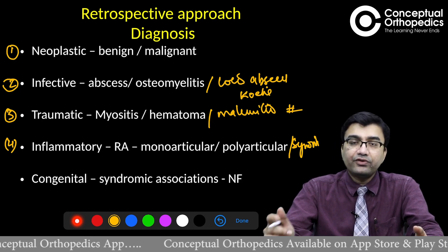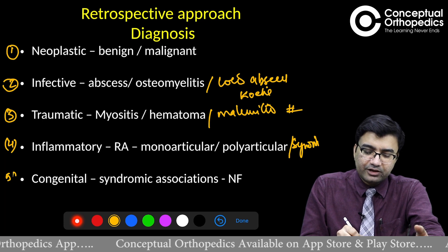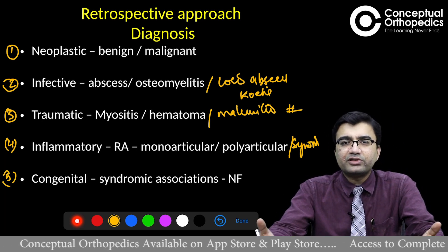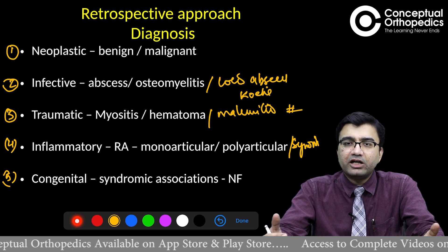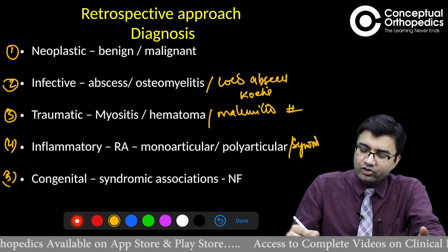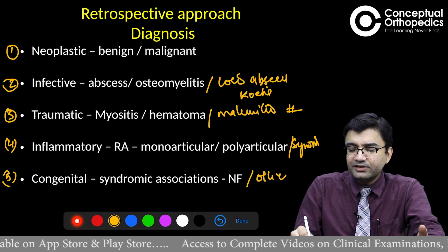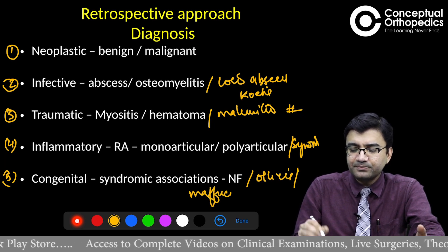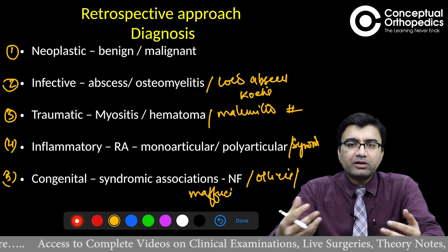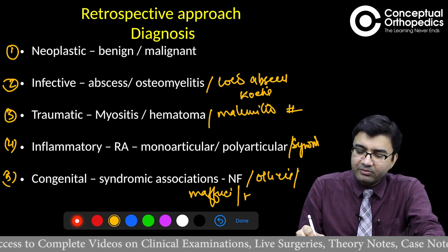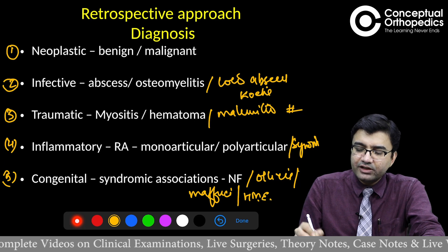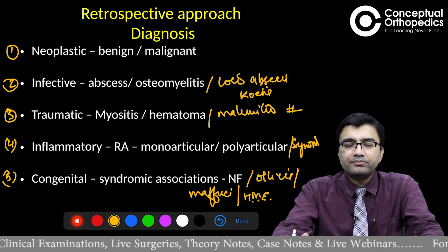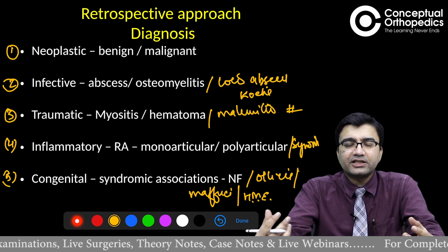The fifth cause of swelling may be a congenital cause. You may see conditions like multiple neurofibromas, Ollier's disease, or Maffucci syndrome — examples where there may be multiple hereditary conditions with multiple exostosis or multiple bony outgrowths in the body. In neurofibroma you may see multiple skin tags as well.